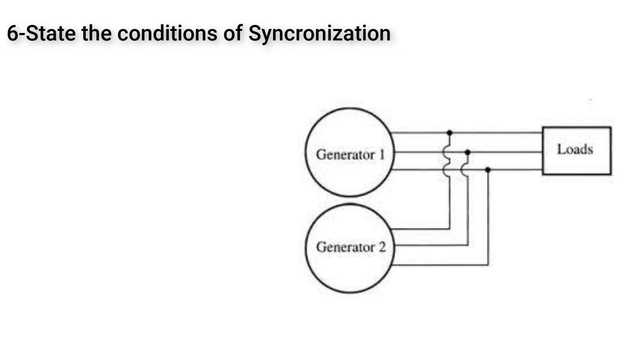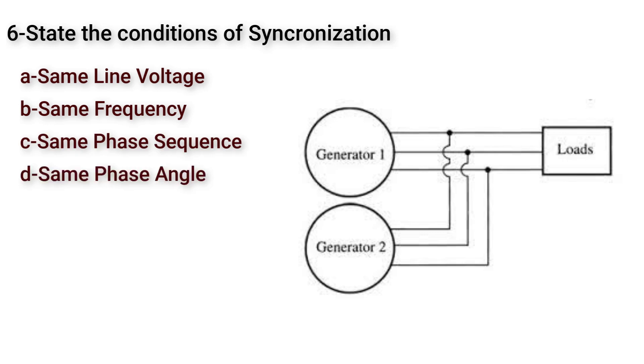State the conditions of synchronization. Well, there are five conditions that must be met before the synchronization process take place between two different sources. Same line voltage, same frequency, same phase sequence, same phase angle, and at last same waveform.